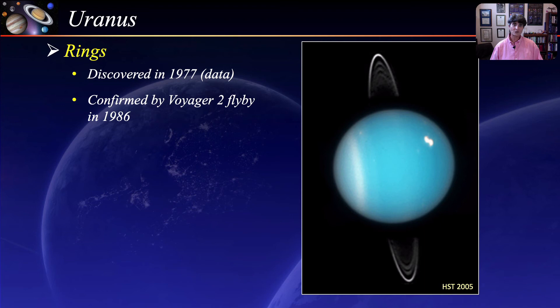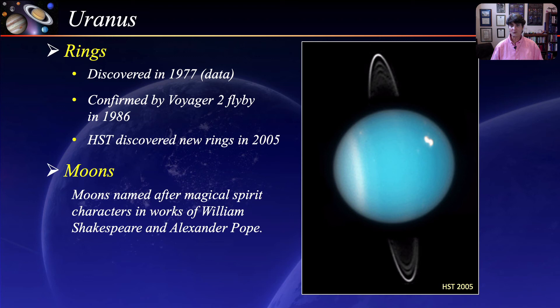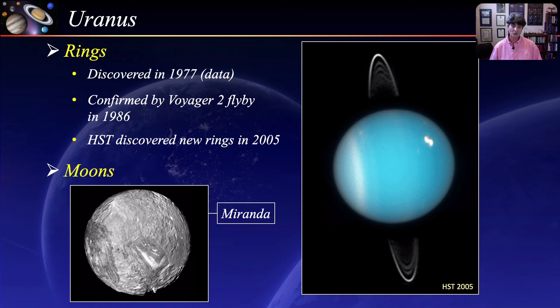Uranus has 27 known moons, all named after magical spirit characters from the works of William Shakespeare and Alexander Pope. Probably the most interesting moon is Miranda. With its patchwork surface structure, it looks like it was just sort of pieced together — perhaps this moon should have been named after Mary Shelley's character Frankenstein. Scientists still disagree on what caused this surface.